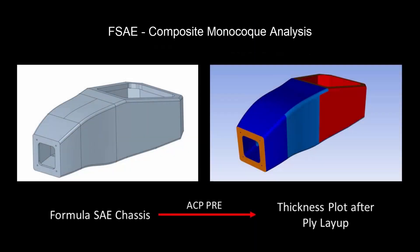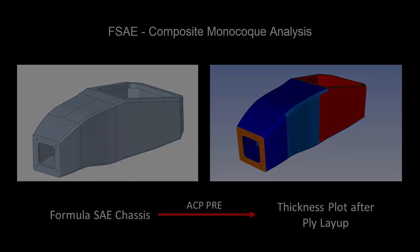In this series of videos, we will lay up carbon fiber on a FSAE chassis and analyze it under torsional loading condition.